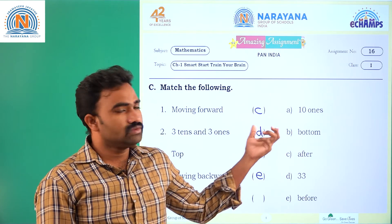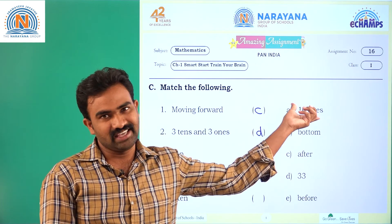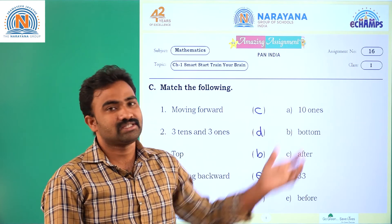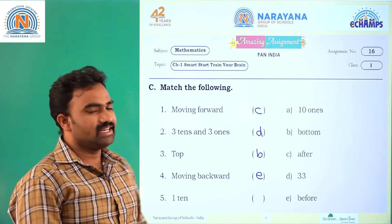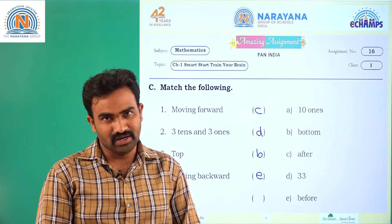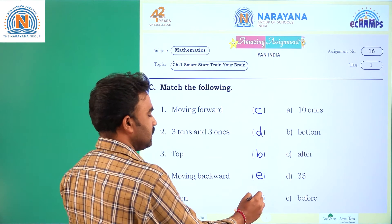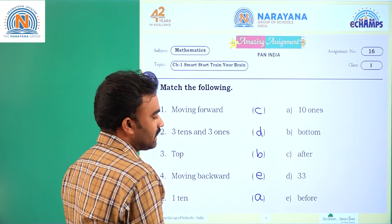Next one: one ten is equal to — the remaining option is A, which is 10 ones. We already know that one ten is equal to 10 ones. So the answer is A.